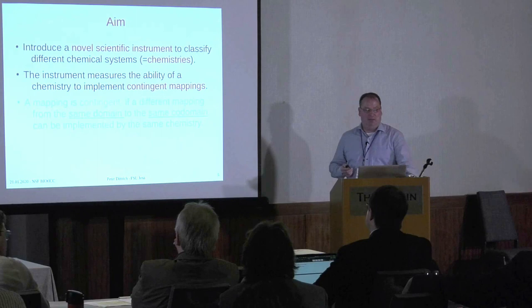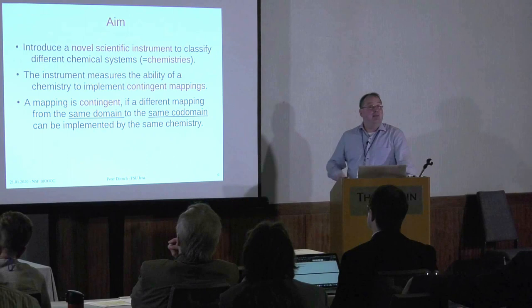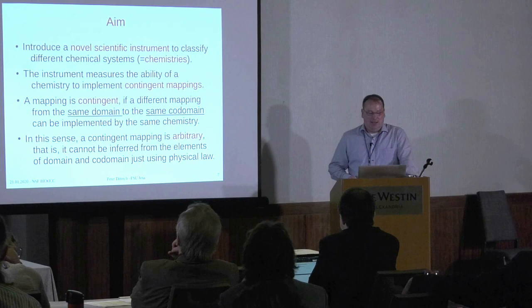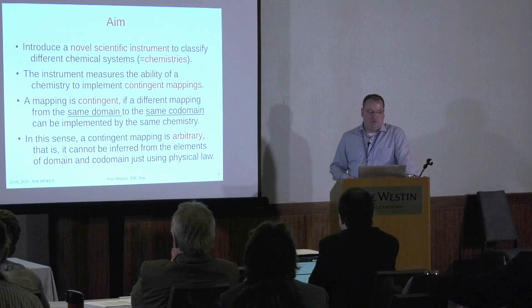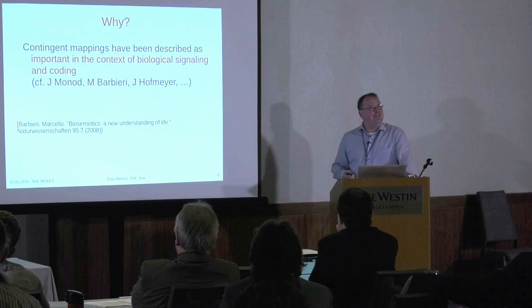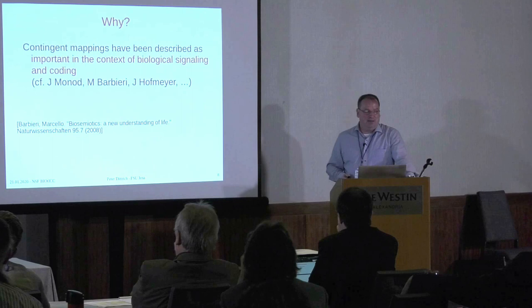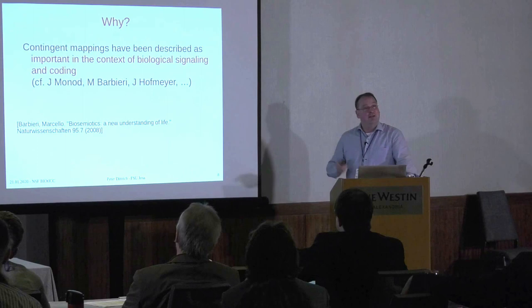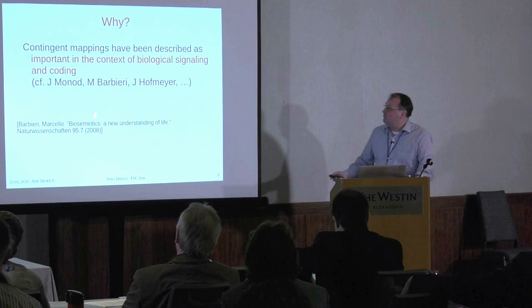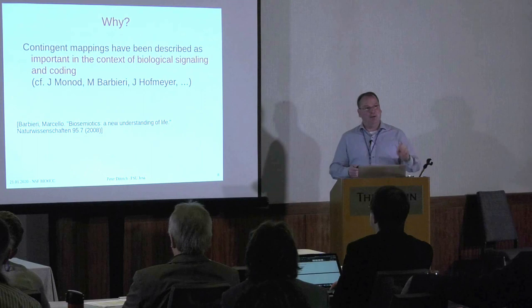The aim now is to introduce a novel scientific instrument to classify different chemical systems. And this instrument measures the ability of a chemistry to implement so-called contingent mappings, that means arbitrary mappings. And the mapping is called contingent if a different mapping from the same domain to the same codomain can be implemented by the same chemistry. And in this sense, a contingent mapping is arbitrary, that is, it cannot be inferred from the elements of the domain and codomain alone, just using physical laws.